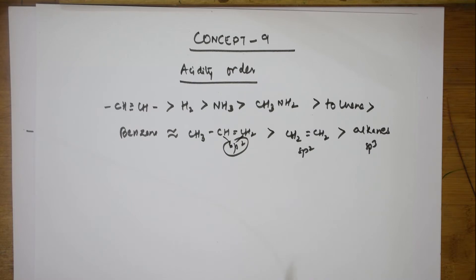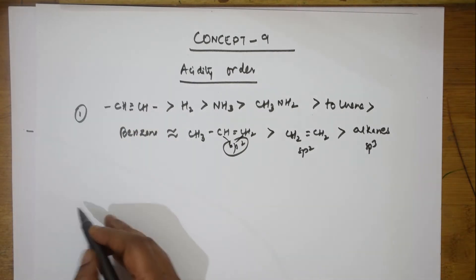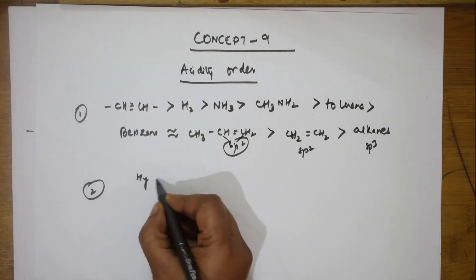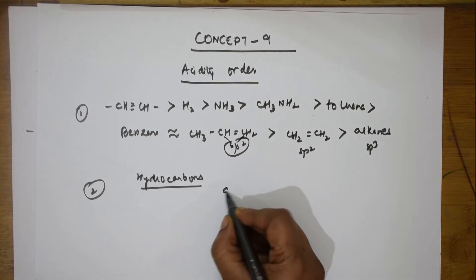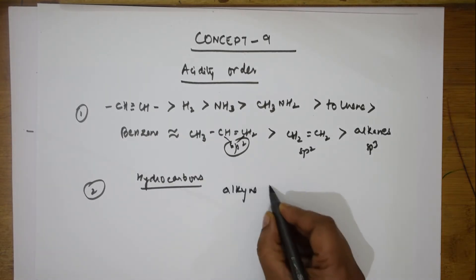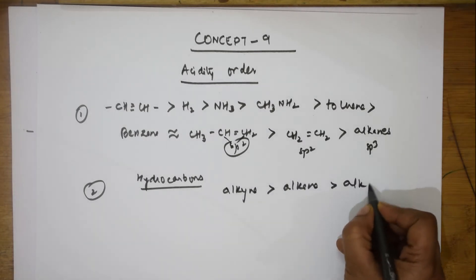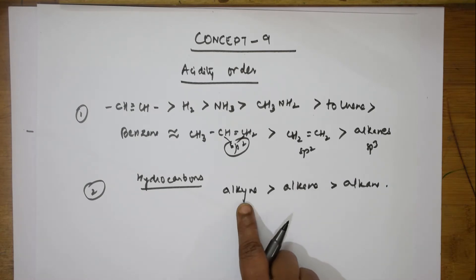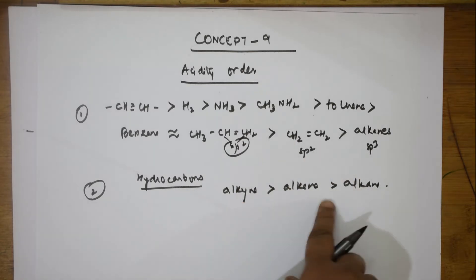If you have only hydrocarbons, among hydrocarbons there is also an order. It is: alkyne > alkene > alkane. Alkane is the least acidic and alkyne is the maximum acidic. Remember this concept, because in the exam paper if they give you any of these combinations, this is the order.